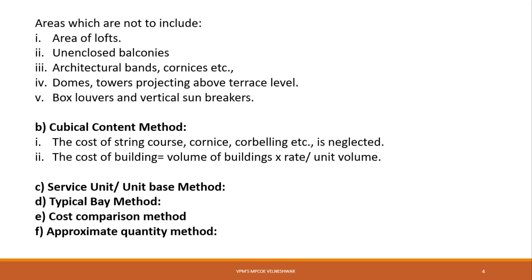In the Cubic Content method, the cost of a structure is calculated by multiplying the total cubic content (volume) of the building by the local cubic rate. The local cubic rate is also calculated from nearby locality buildings. In the Plinth Area method we calculated rate per square meter; in Cubic Content we calculate the rate per unit volume.